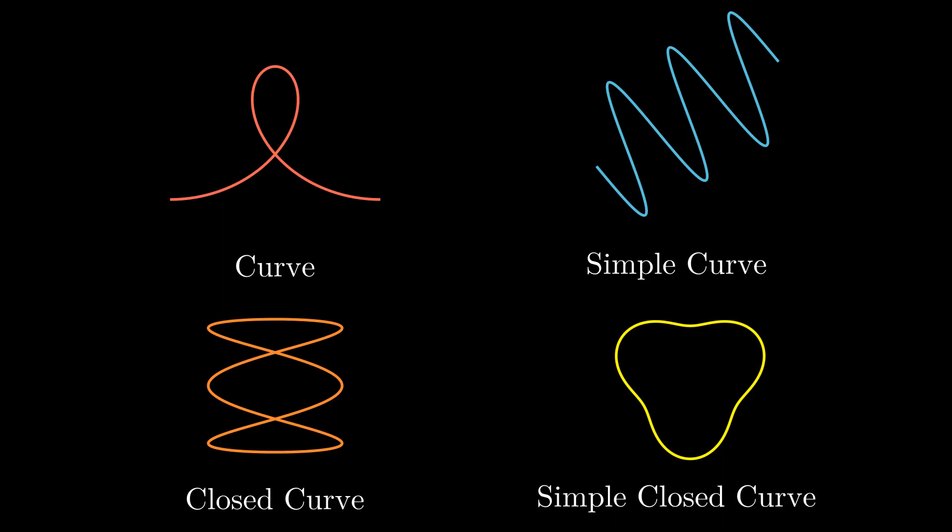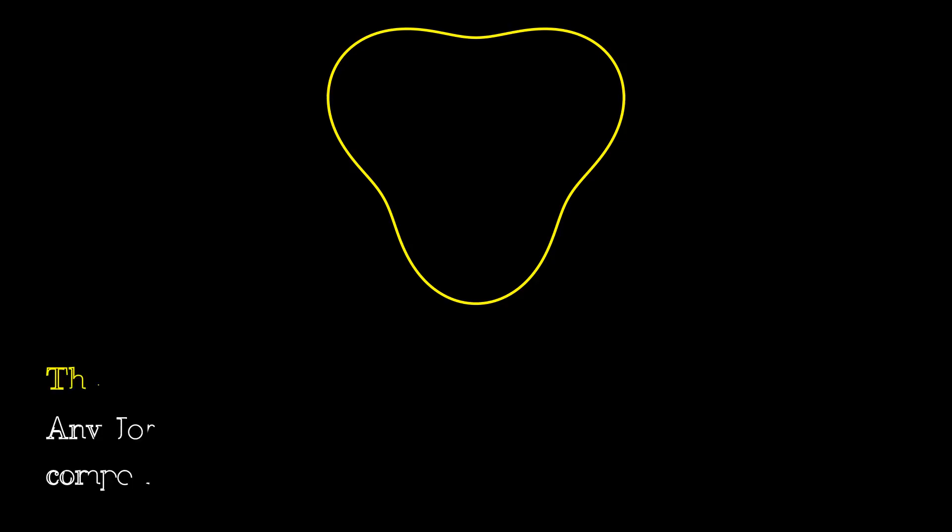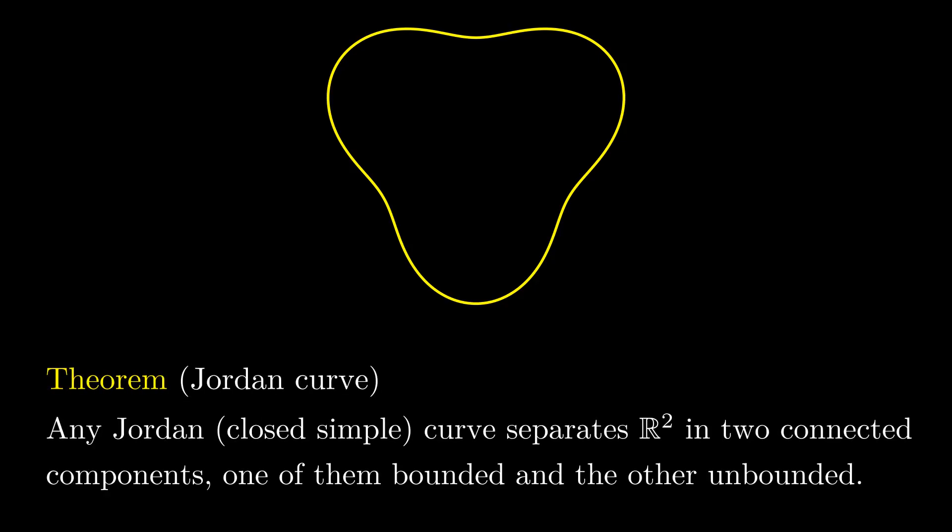Simple closed curves have this special property that they separate the plane in two pieces, the interior and the exterior. This is the content of the Jordan curve theorem, which may feel obvious at first, but is actually surprisingly hard to prove.